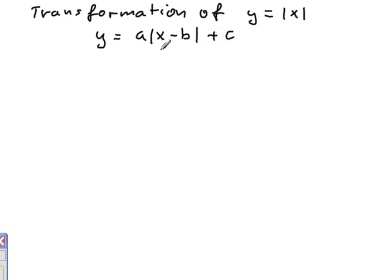So what each coefficient or constant does. So coefficient a would just bring those two branches of V-shape closer if a is greater than one or further apart if a is less than one.